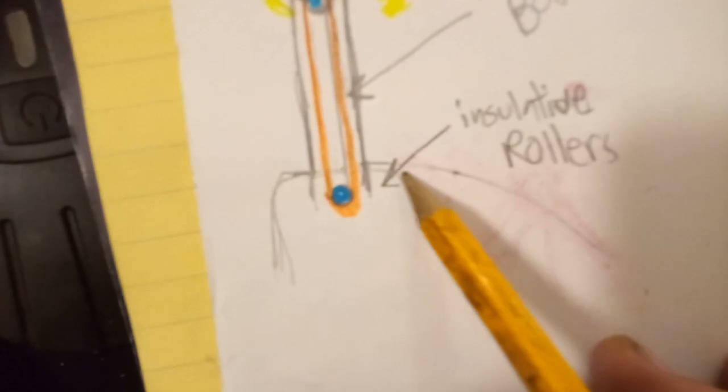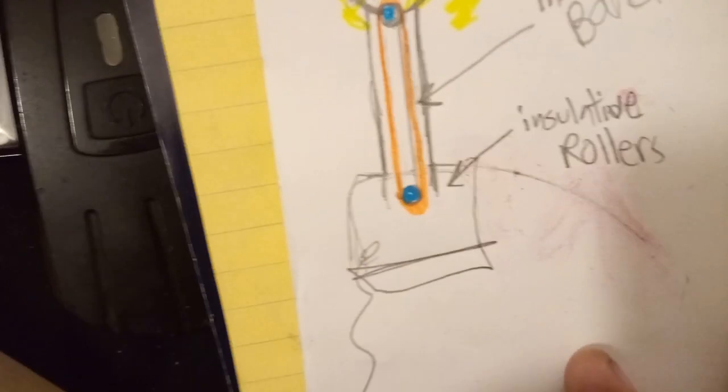Let me show you what a Van de Graaff generator is. A Van de Graaff generator is like this: there's a bottom, a plug and a cord.